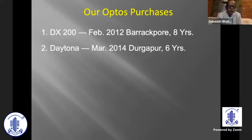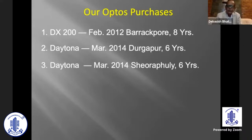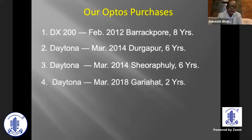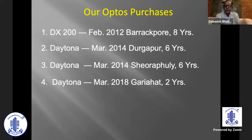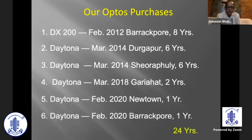We bought two Daytona machines in March 2014, and these are hospitals which see more than 500 patients. The Daytonas have been working for six years, mostly hassle-free. Our technical in-charge has been trained by Optos in Australia and can identify defects; if any replacements are required it is done. I thank the entire sequence of Optos partners: the first was Biomedics from whom we bought the DX200; the next Daytonas were bought through Alcon; then it was from Optos PLC directly; and now Nikon, through which we have bought the latest two Daytonas.